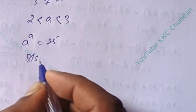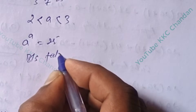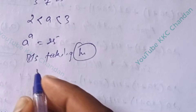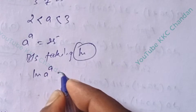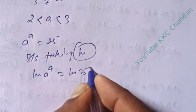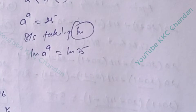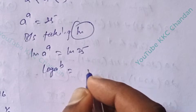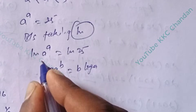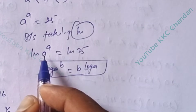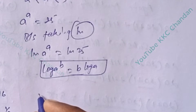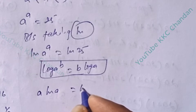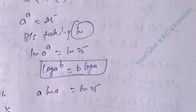In the next step, we take ln on both sides. See here: ln(a^a) = ln(25). We know that log(a^b) can be written as b·log(a). Applying this rule: a·ln(a) = ln(25).